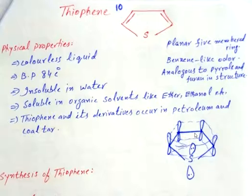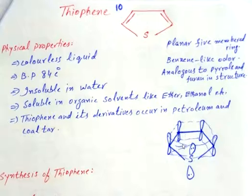The thiophene ring has a planar structure. Each carbon atom of thiophene has sp2 hybridization, so each carbon has one unhybridized p orbital, and these unhybridized p orbitals overlap with each other to make a conjugated system. Sulfur also has two lone pairs of electrons — one lone pair is outside the ring and the second lone pair is inside the ring.